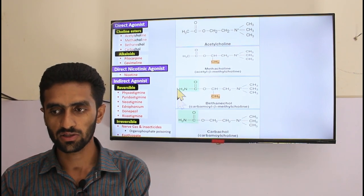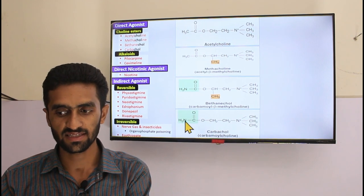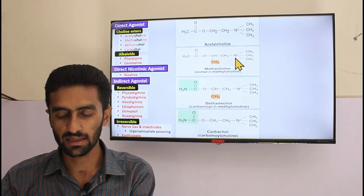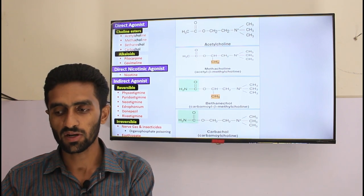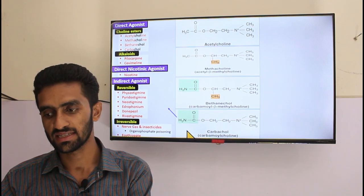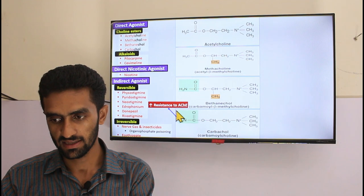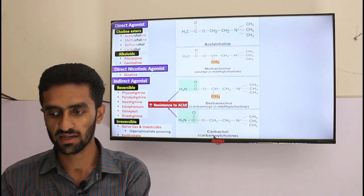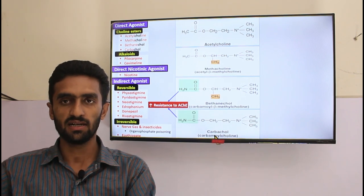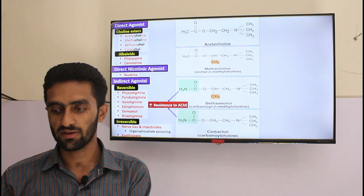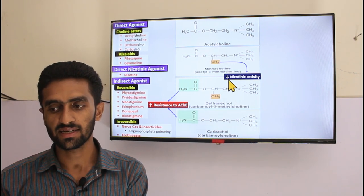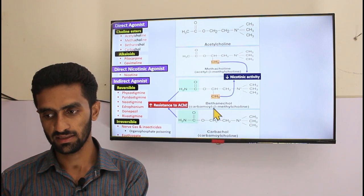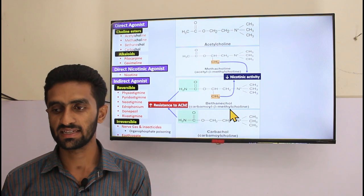In acetylcholine, the ester group is CH3, while in carbachol it is changed to NH2. In bethanechol, there is the same NH2 change plus methylation at the beta site. This NH2 or carbamate formation increases resistance toward acetylcholinesterase, giving longer duration of action. The methyl group decreases nicotinic activity, making them more selective toward muscarinic receptors.